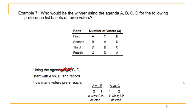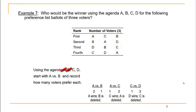The two remaining candidates, C and D, go head-to-head. Looking at the preference list ballots, one voter prefers C to D while two voters prefer D to C — it's all about which candidate is listed higher on their preference list. D wins, candidate C is deleted, and since we've gone through the entire agenda, candidate D wins this election.